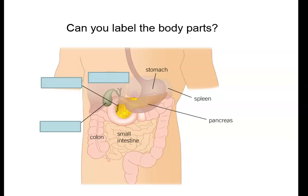That little green sac there is actually a lobe of the liver called the gallbladder. The gallbladder is where the body stores bile. The bile will pass out of the gallbladder down that little green tube called the bile duct, and it will empty into the first part of the small intestine, which is the duodenum. And then we have a large organ which passes across your body, which is the liver.